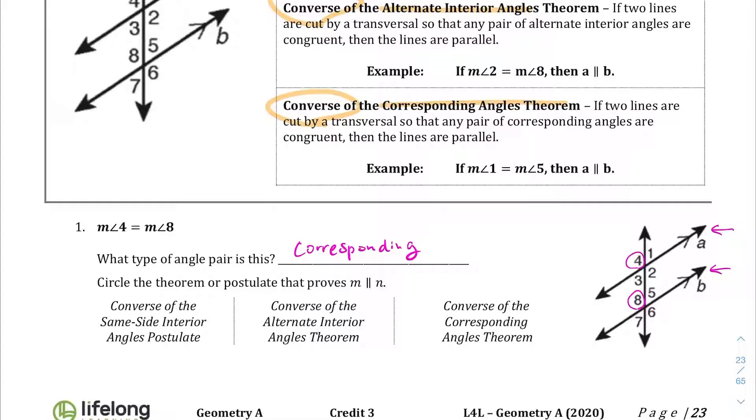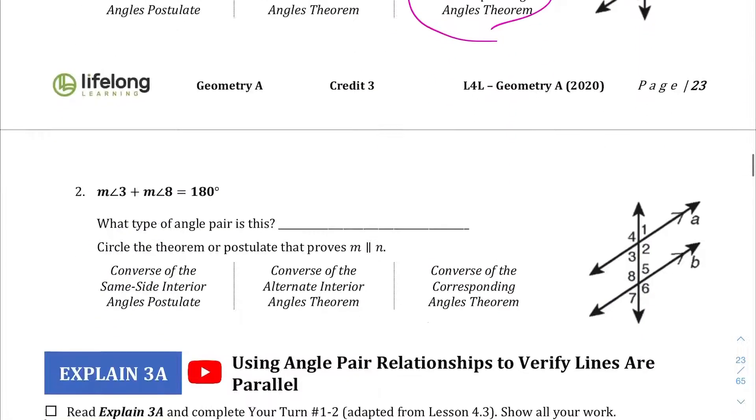And so the theorem or postulate that proves that those two lines are parallel is going to be the converse of that. So this is going to be the theorem that proves that the lines are parallel. By the way, this is supposed to be A and B, not M and N. So I just want to make that clear. And also the same thing happens in question two.